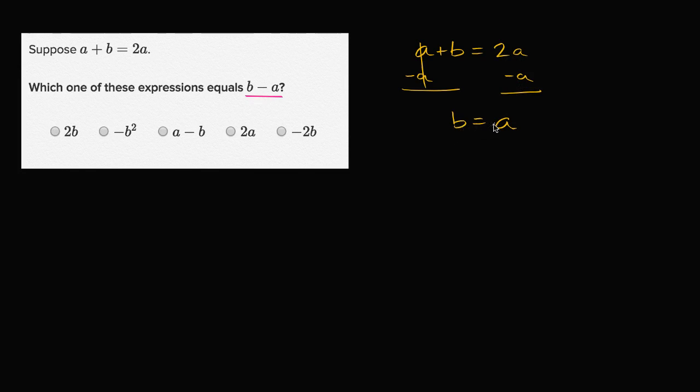I can figure that out by subtracting a from both sides. If I subtract a from both sides, then I'm going to get on the left hand side b minus a, which is what we want to figure out, equal to a minus a, which is equal to zero. So b minus a is equal to zero, which is not one of the choices.